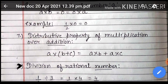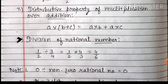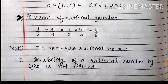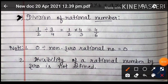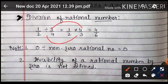Next is division of rational numbers. Example: 1 by 2 divide 3 by 4 equals to 1 by 2 multiplying 4 by 3 equals to 4 upon 6. यहाँ पर divide को हम multiply में change कर देते हैं और जो 3 by 4 है उसका reciprocal कर लेते हैं — 4 by 3. Numerator को numerator से multiply किया — 4 आया, denominator 2 को 3 से multiply किया — 6 आया. इसी तरह से अन्य examples में भी divide को multiply में change कर reciprocal लेंगे.